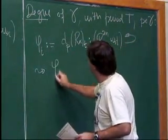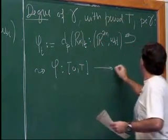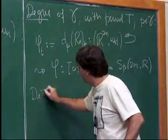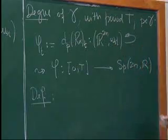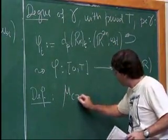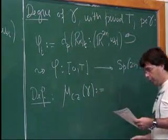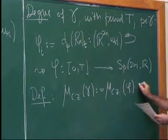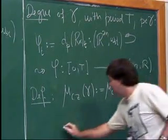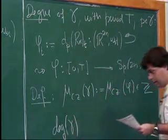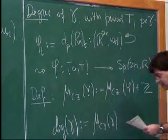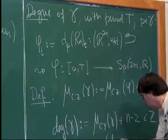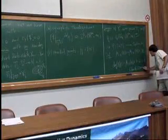With these ingredients, one can define the degree of a closed Reeb orbit gamma with period T and marked point P. We consider the linearized Reeb flow along this orbit, viewed via the trivialization as a path in the symplectic group Sp(2n). Associated to such a path there is the Conley-Zehnder index — or the Robbin-Salamon extension thereof. I define the degree of the orbit to be the Conley-Zehnder index shifted by n−2.